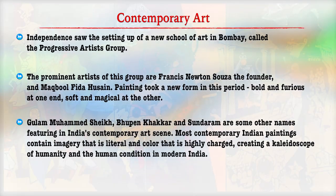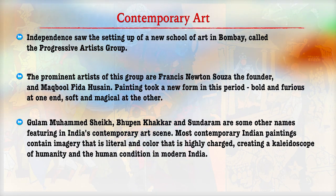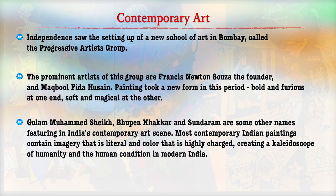After independence, a number of new art schools were set up. The most prominent of these is the Progressive Art Group. Painting took a new form in this period, basically focused on contemporary issues. Ghulam Muhammad Sheikh, Bhupen Khakhar and Sundaram are some of the names that were prominent in contemporary scenes, and they focused on the human conditions of modern India.